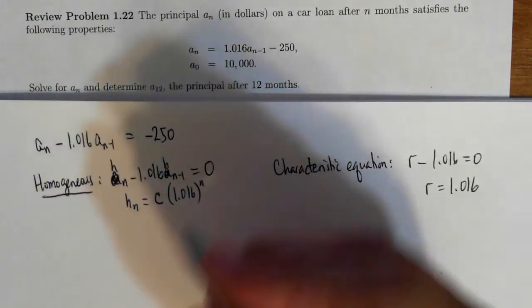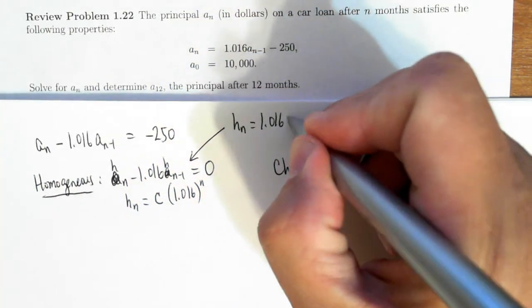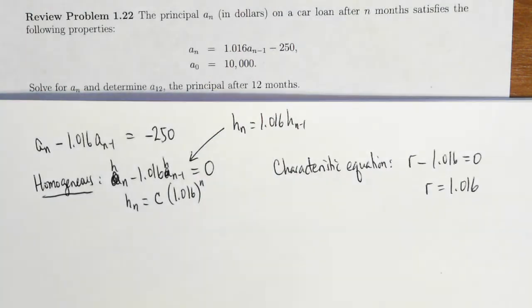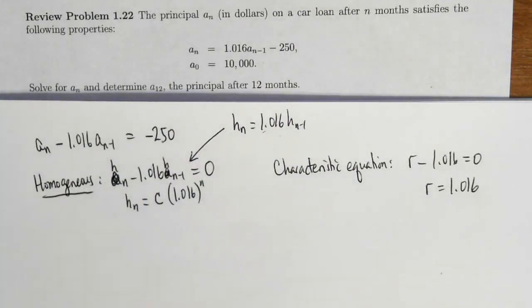And this solution makes sense when you think about it. This means h_n is equal to 1.016 h_{n-1}, which means that it's basically geometric. There is a common ratio, 1.016. I multiply the previous term by this to get the next term. So it's geometric. And so this has the form of a geometric sequence.